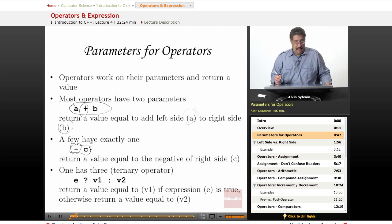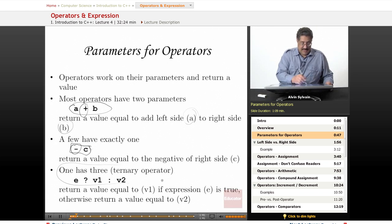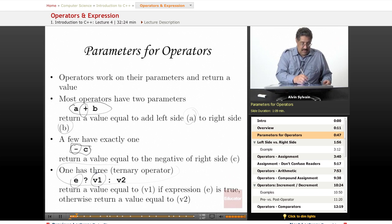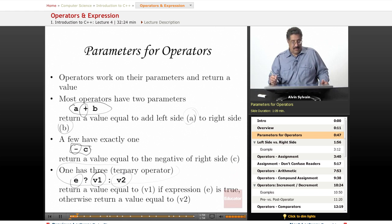We do have a ternary operator in C and C++ where we have an expression which is evaluated for truth or false. If it's true, it returns the value of the first one between the question and the colon. And if it's false, it returns the second one.